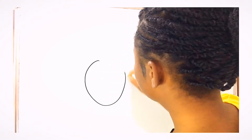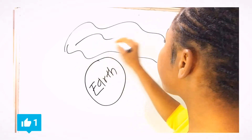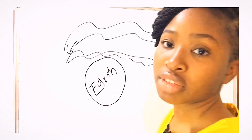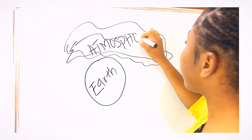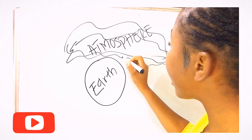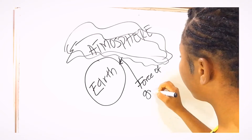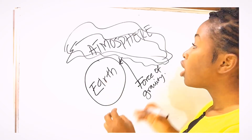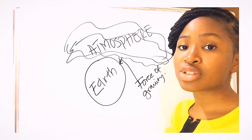The atmosphere is basically a space around the earth that is filled with a mixture of gases, which is held from coming into the earth by a force of gravity. This is the earth, and we have the atmosphere around it. It's a mixture of several kinds of gases, held from coming into the earth by force of gravity.